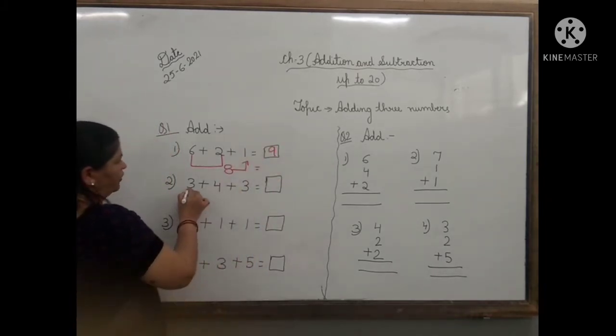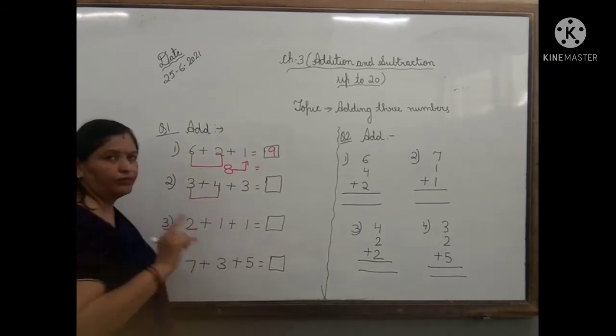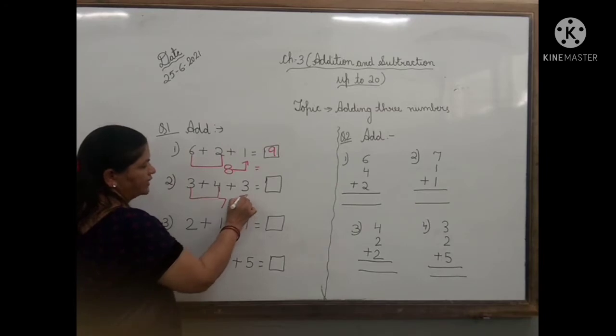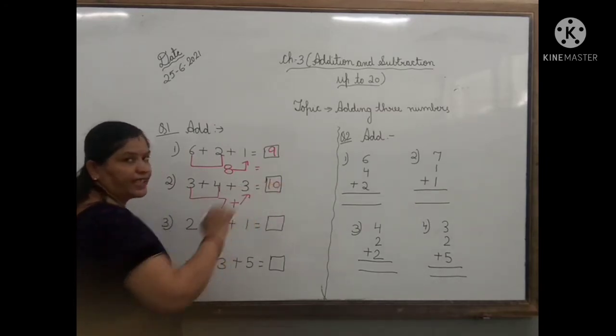Second one, 3 plus 4. What will be the answer children? 7. And 7 plus the next number 3, 7 plus 3 that is 10.